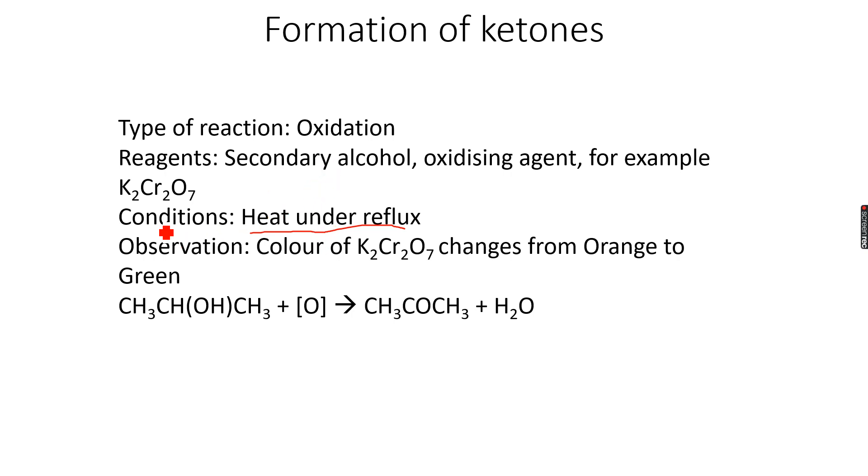Now we can use K2Cr2O7 for this oxidation as the oxidizing agent, which is potassium dichromate, and the color change is orange to green. You have to remember these colors. If we use potassium manganate, KMnO4, the color change is purple to colorless. In the case of KMnO4 it's purple to colorless, in the case of K2Cr2O7 it is orange to green.